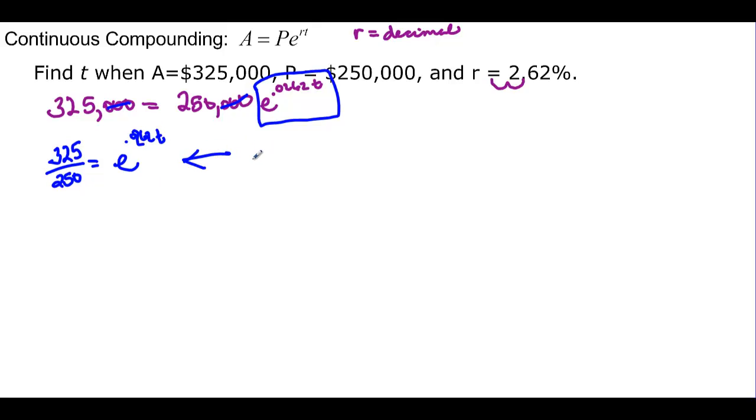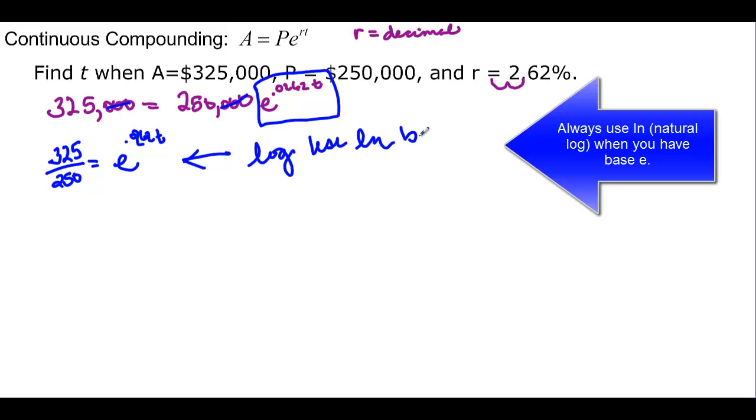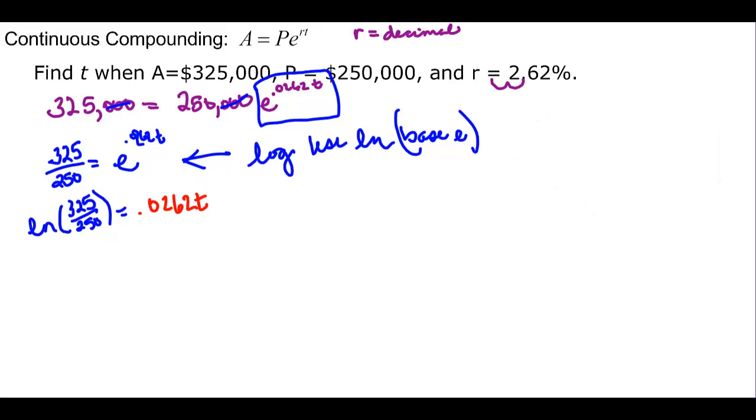Remember that we have, we need a log, but we need to use ln because of base e. So the natural log of 325 over 250 is equal to, and I'm going to bring my exponent down. So the 0.0262t is my exponent, and then times the natural log of e. The natural log of e would be 1, so I'm multiplying by 1 here. So all I have to do finally then is take my natural log of that 325 over 250 and divide that whole thing by my decimal 0.0262, and I should find out what t is.